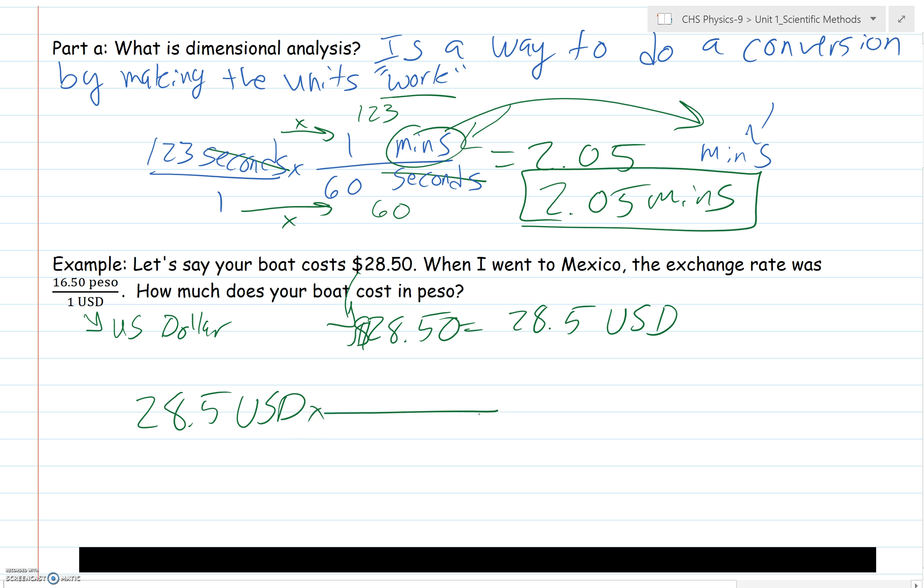What I'm going to do is put the number that I'm given, which is 28.5 USD or U.S. dollars. Whenever you're doing a dimensional analysis problem, you're always going to multiply by some sort of ratio. As always, you can put your given number over one. What I want to do here is make the units that I have cross out, and then get the units that I want in the end. If I want USD to cross out, I'm going to put that on the bottom. What I'm trying to get in the end is peso, so I'm going to put peso on the top.